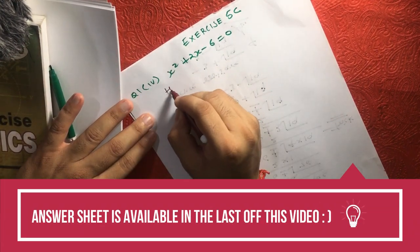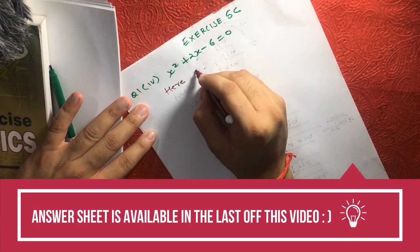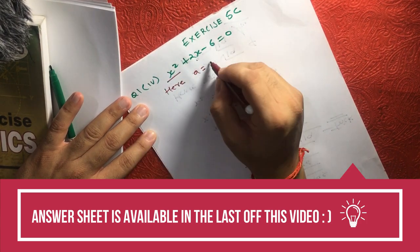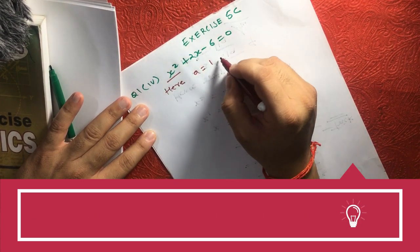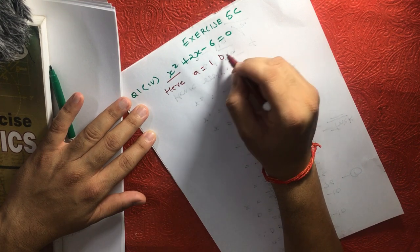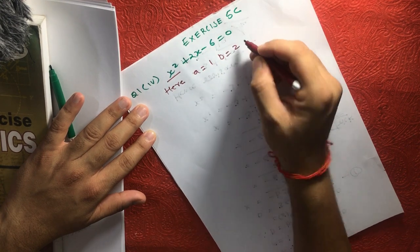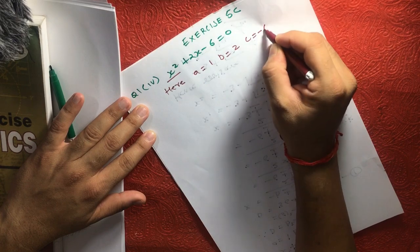Here, let's consider A equals 1. I am just considering the numeric part of this equation. B equals 2 and C equals minus 6.